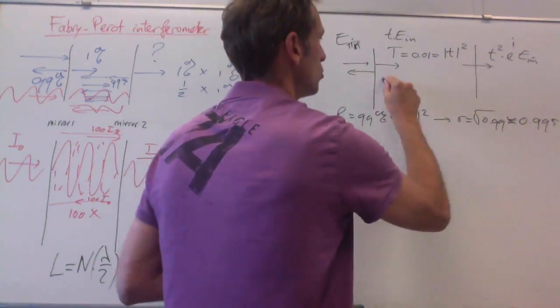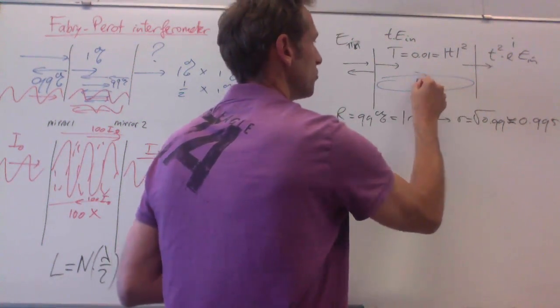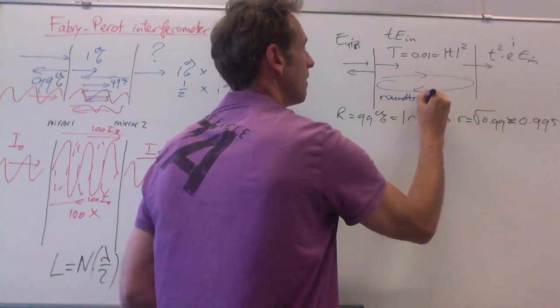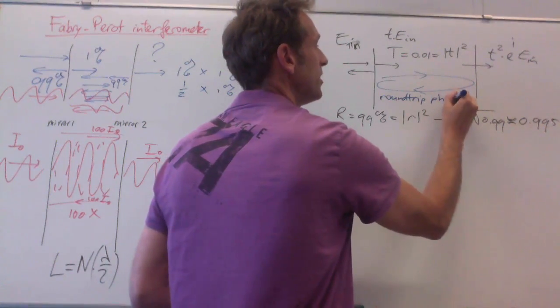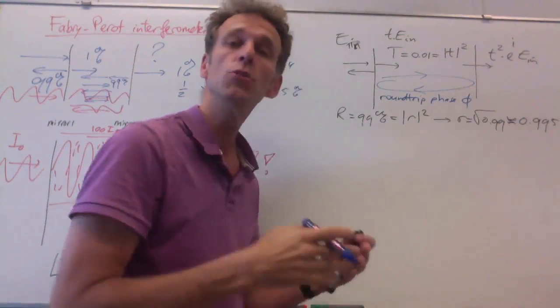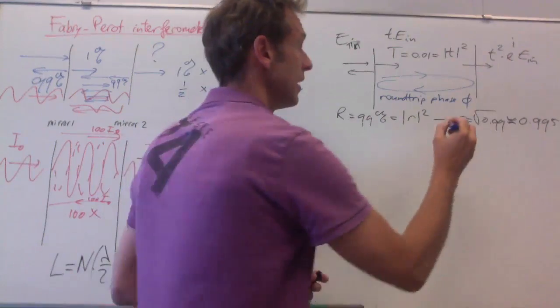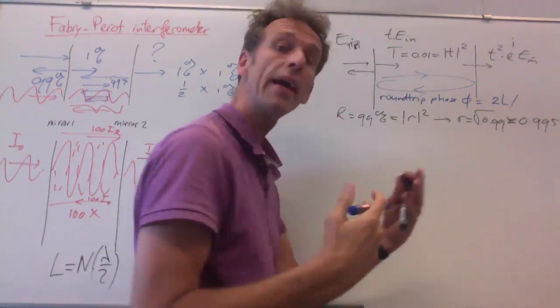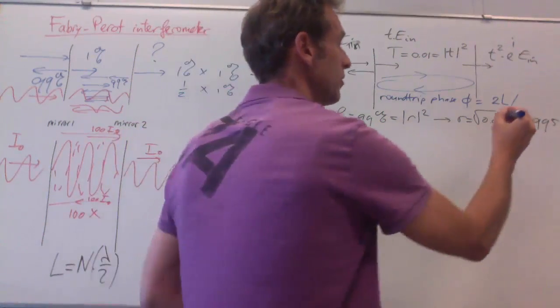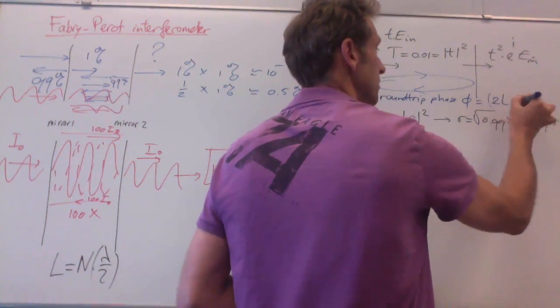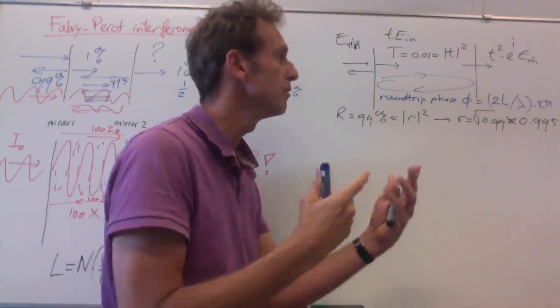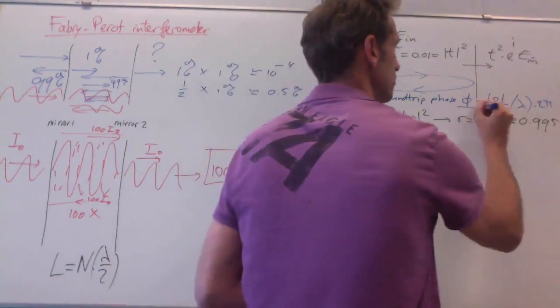And for the phase factor, we'll introduce the concept of round-trip phase. The round-trip phase is the phase acquired by the light during a round-trip, and the round-trip takes a length 2L, which you have to compare with the wavelength of light. In a single wavelength, you get 2π phase. So this is the round-trip phase.